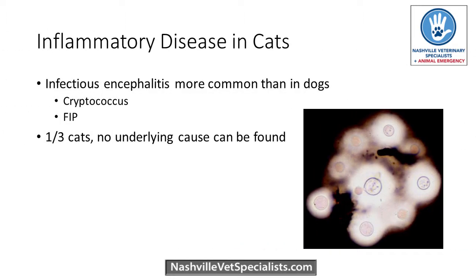Just a brief note about cats: autoimmune encephalitis is really, really rare in cats. The opposite is true — if we're dealing with encephalitis in a cat, we assume it's infectious until proven otherwise. The two big differentials to consider are FIP and cryptococcus. There are times when we can't find a cause, but immune-mediated CNS disease in cats remains very rare.